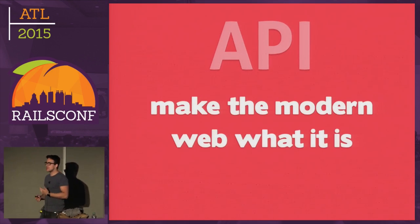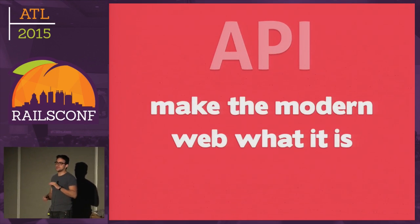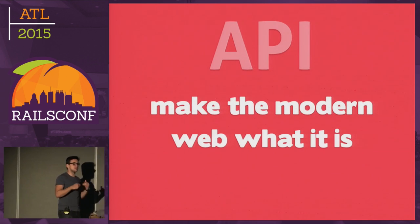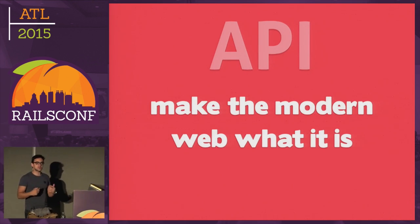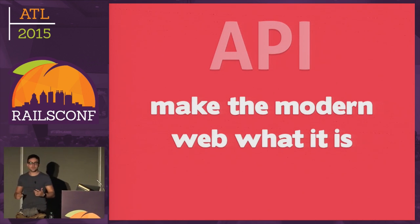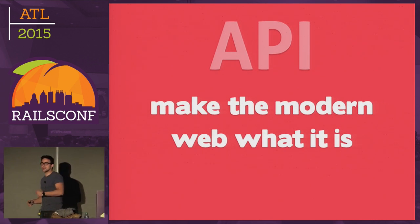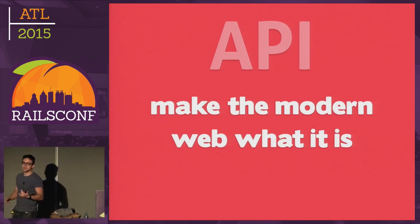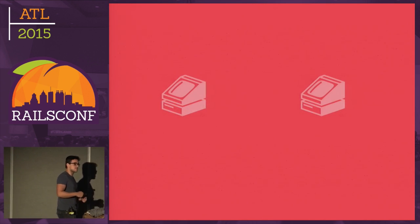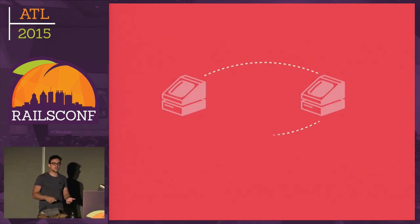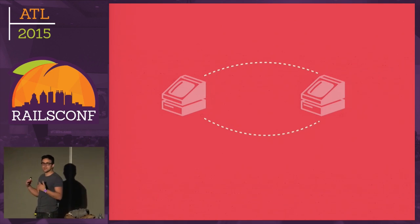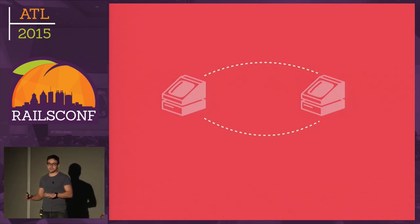API is what makes the web what it is today. We are always using it, we all have been using it, and it's really special for the internet. API is not a new technology — it has been used way before the internet, and the internet has pushed it even further by increasing the power of how machines can communicate with other machines.